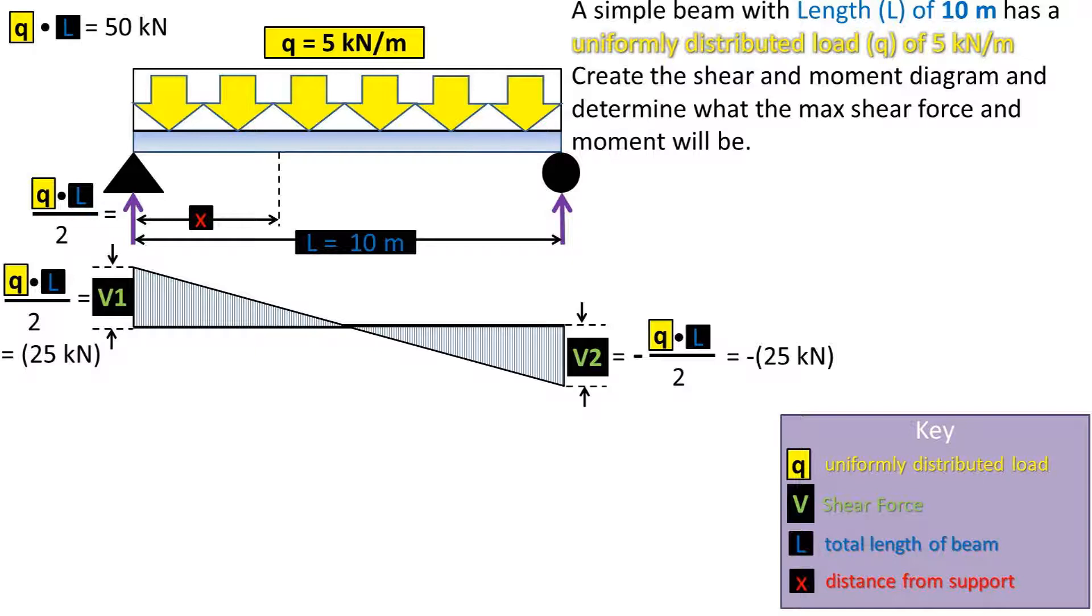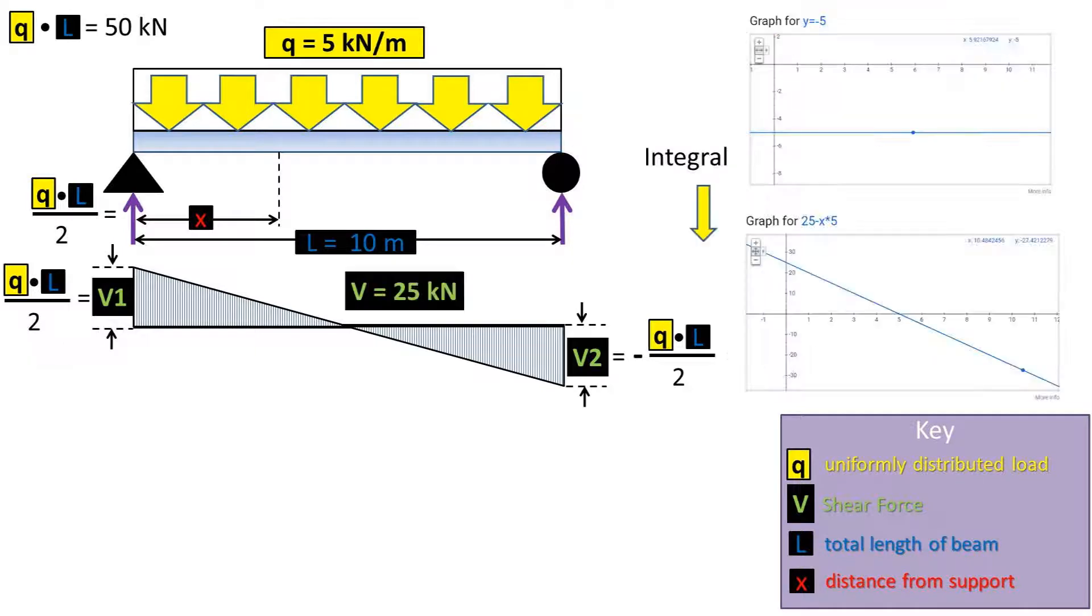Looking at this graph, we can see that the maximum shear force is equal to the load on the support, which is 25 kilonewtons. We can graph this function by using the equation 25 kilonewtons from the support minus x, which is the distance in meters from the support, times the distributed load, which is 5 kilonewtons per meter.